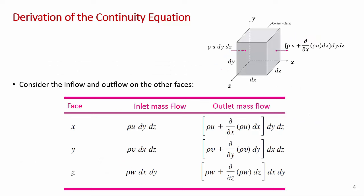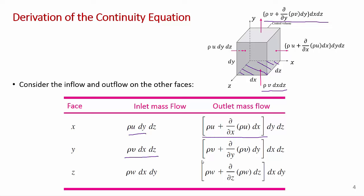You can do exactly the same thing in the y and z directions — looking at mass flow in and out. For the y direction, we have rho v times area dx dz, and then at the outlet, add the partial derivative of rho v in the y direction times dy. We get the inlet and outlet terms in the x direction, the y direction, and the same can be done in the z direction very easily.